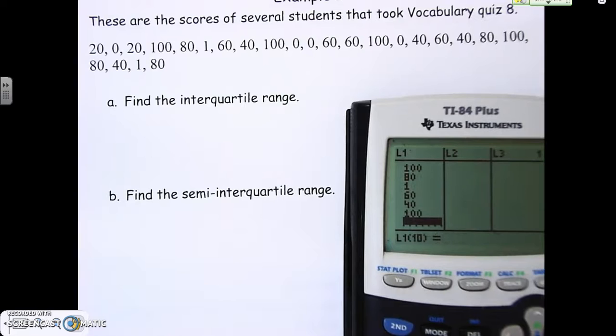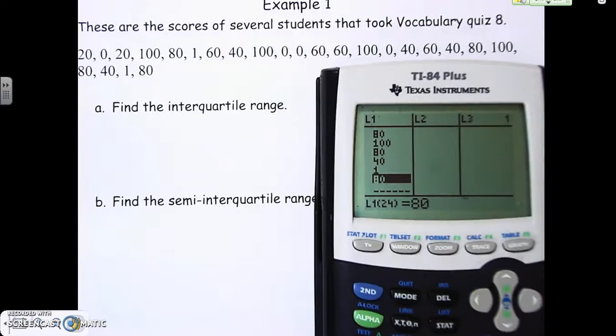Once you have all the numbers put in, this number right here tells you how many numbers you have altogether. If you counted all of these numbers, you'll see there's actually 24 numbers. When you get down to this part, if you have 24 there matching the amount of numbers, that means you did it right. Make sure you check everything; if you have to have your neighbor look at it, that's okay, but make sure you have all numbers in because this next part is going to be completely wrong if you don't.